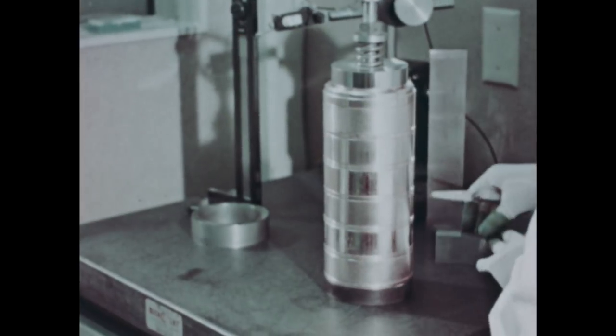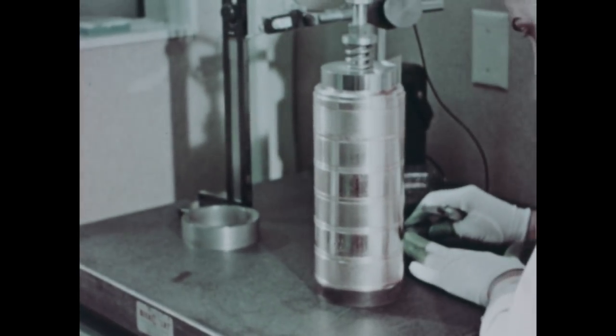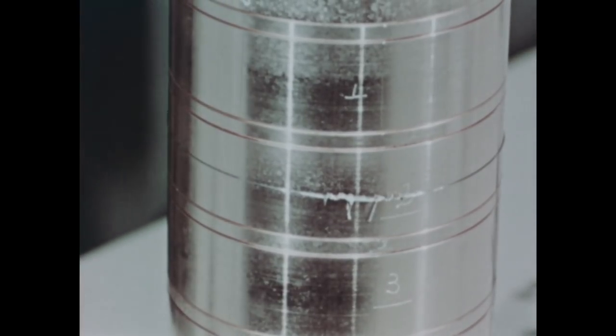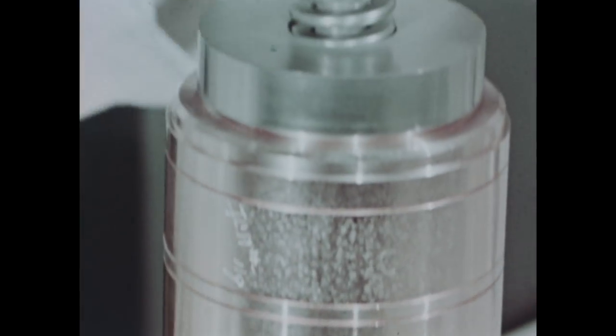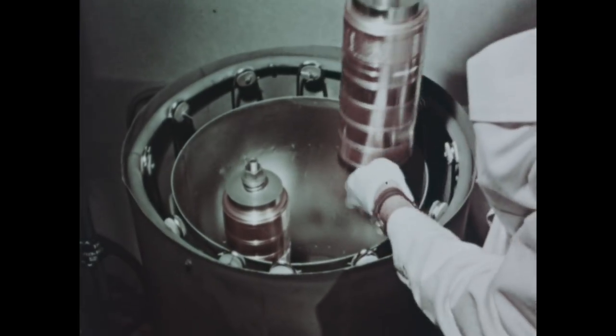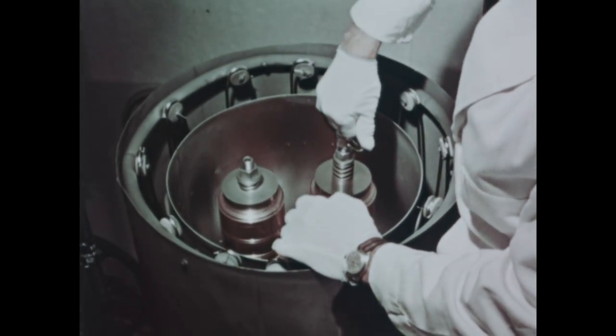The unit is checked for straightness before being moved to the small brazing furnace. An alloy flag is tied on as a temperature check. Two units are brazed at one time.